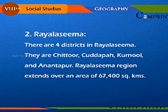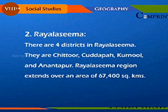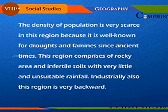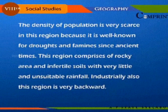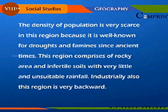Rayala Seema. There are 4 districts in Rayala Seema. They are Chitoor, Kadapa, Kurnool, and Anantapur. Rayala Seema region extends over an area of 67,400 square kilometers. The density of population is very scarce in this region because it is well known for droughts and famine since ancient times. This region comprises rocky areas with infertile soils and very little and unsuitable rainfall. Industrially also, this region is very backward.